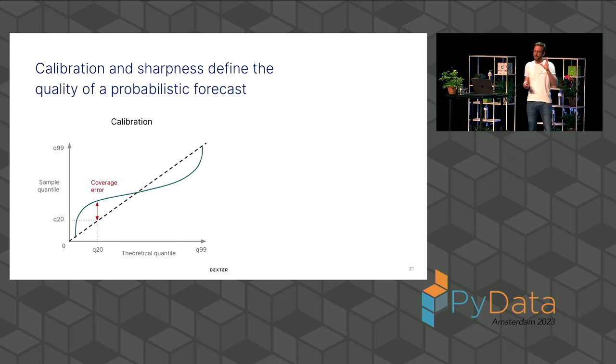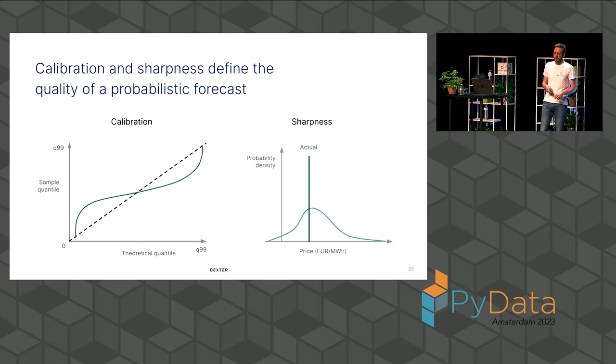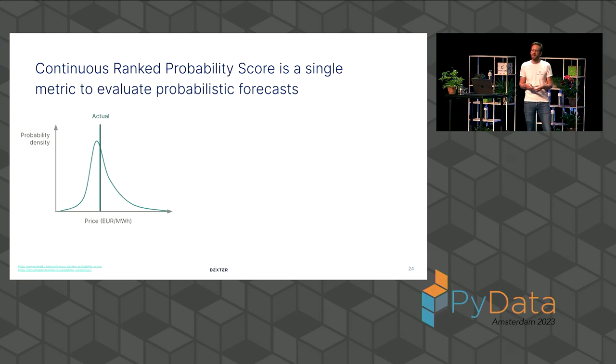The model can be perfectly calibrated, but still not give you a lot of predictive information. And this baseline approach can be very broad uncertainty for each point. So therefore, you also want to look at the sharpness. Basically, this is our probability distribution function again, and this kind of PDF gives us a different picture than this kind of PDF. So that's the sharpness.